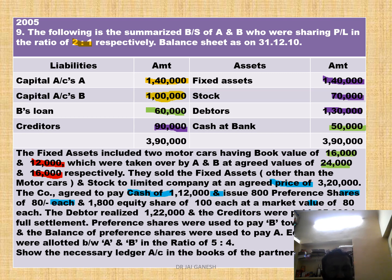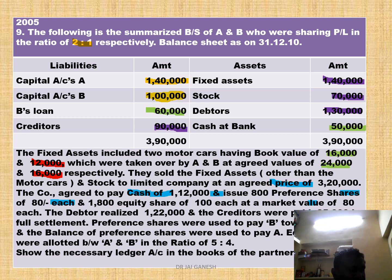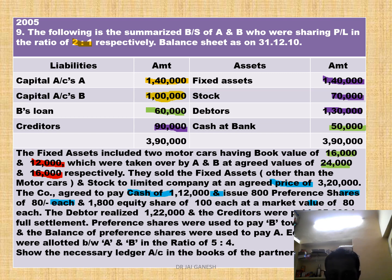So students, the purchase consideration of Rs. 3,20,000 is partly cash Rs. 1,12,000, partly preference shares Rs. 64,000, and partly equity shares Rs. 1,44,000. The equity share amount is 1,800 multiplied by 80. You must take the market value of Rs. 80, not the face value, to get the correct answer.